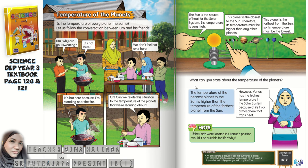What can you state about the temperature of the planets? The temperature of the nearest planet to the sun is higher than the temperature of the farthest planet from the sun. It's logical, just like Lim and his friends — Lim feels very hot and is sweating because he is nearest to the barbecue set, whereas the girls don't feel hot at all because they are far away from the source of heat. It's the same concept.